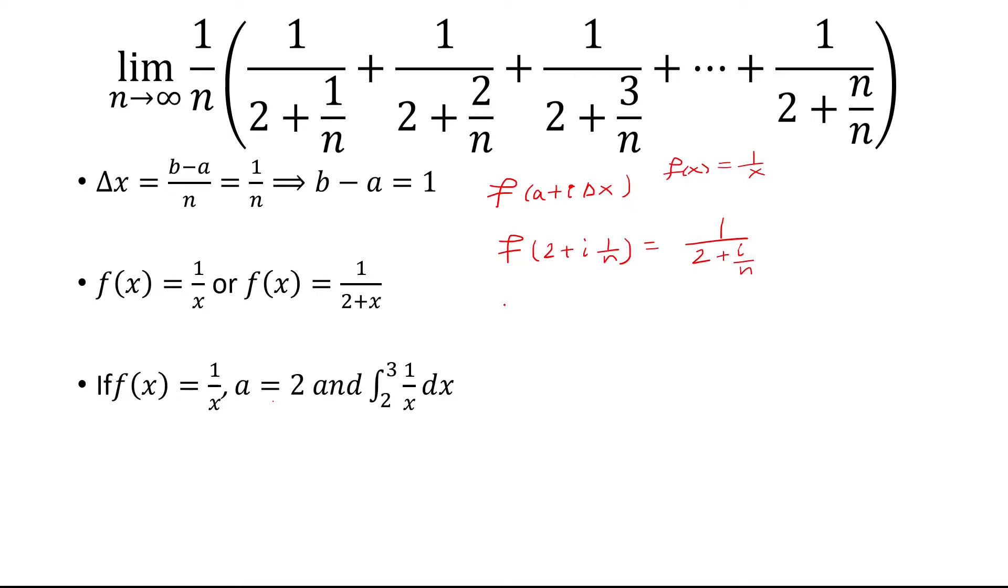So then a is 2, b minus a is 1. So that means the difference between the two bounds is 1. If the lower bound is 2, that means the upper bound is 3. And so we have the integral from 2 to 3, 1 over x dx.